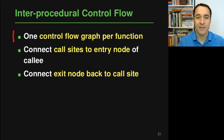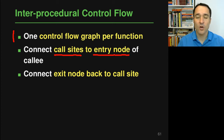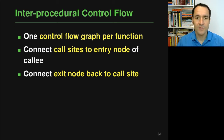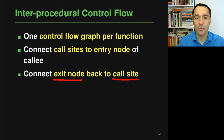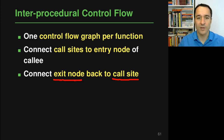Specifically, there is one edge that connects a call site — a place in the code where a function is called — to the entry node of the callee, that is, the entry node of the function being called. There is also an edge that connects the exit node of a function, basically the return statement, back to the call site, so that we know control can flow back from the exit node to where the function was called.